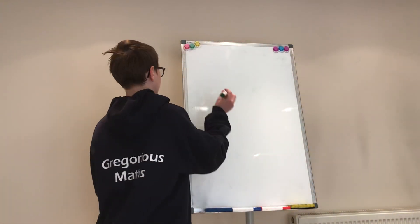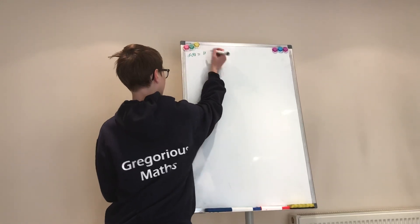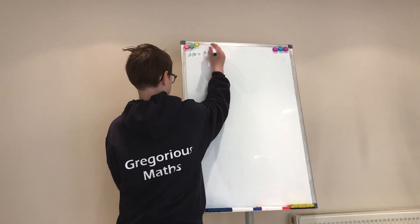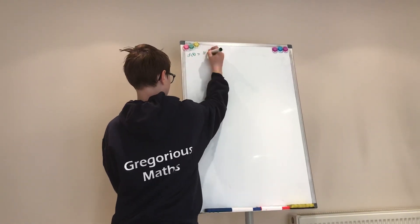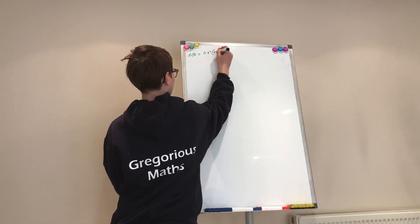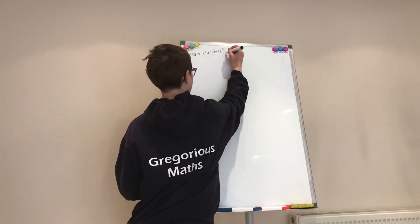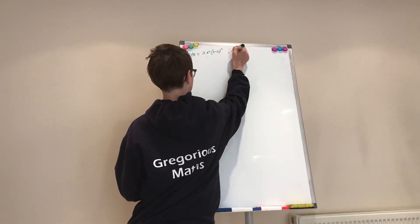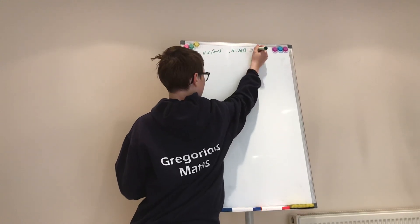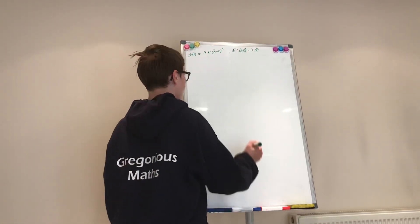So the function f(x) equals 1 plus x squared times x minus 2 all squared, and the function goes from the closed interval between 0 and 2, to the real line. So what does this function look like?